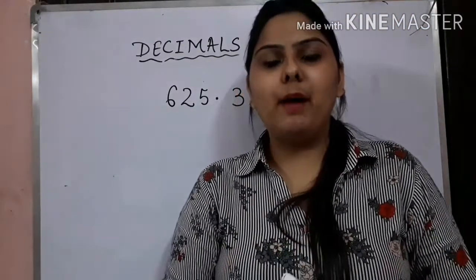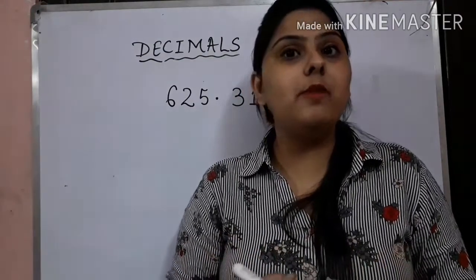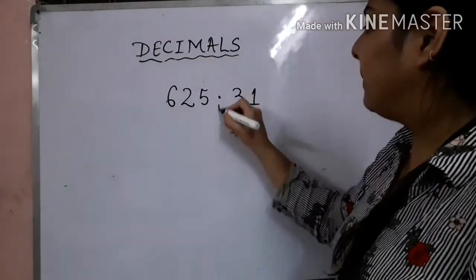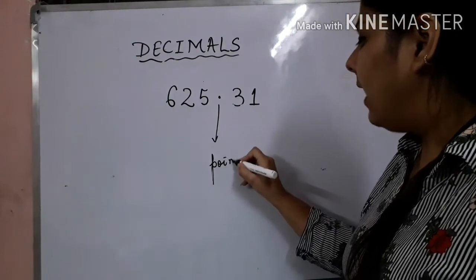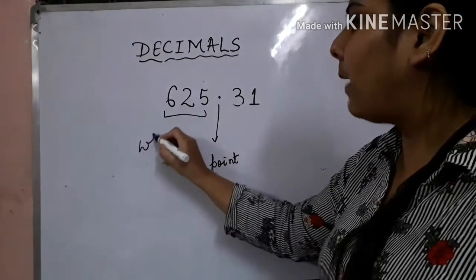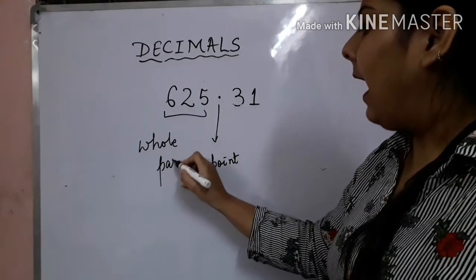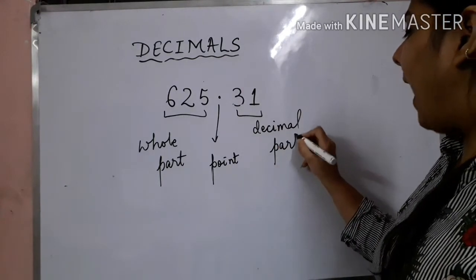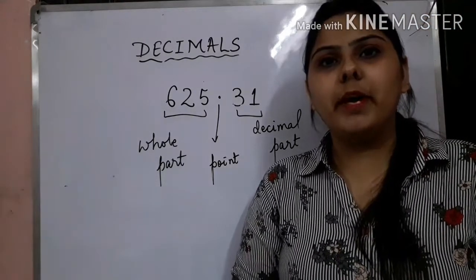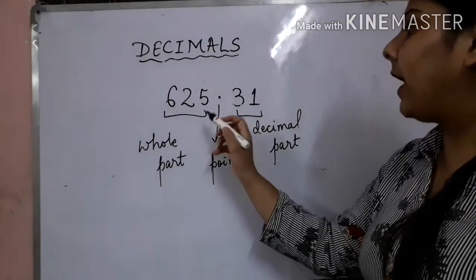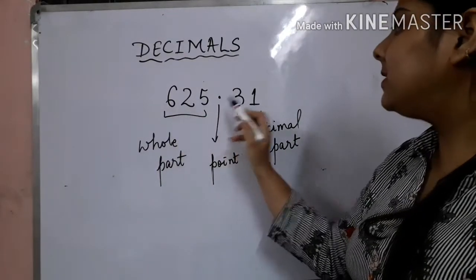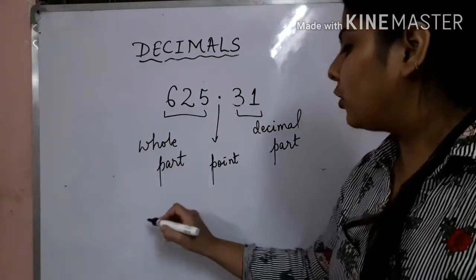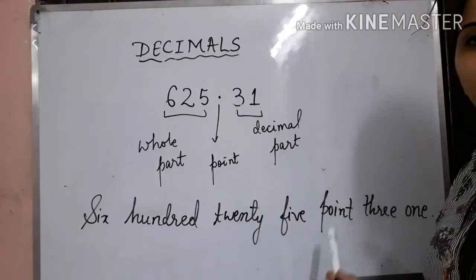Since we have done so many examples, you must have noticed that a decimal number consists of 3 parts: a decimal represented by a point or dot, the left side of the point is considered the whole part, and the right side of a decimal is considered to be the decimal part. So if you want to write the number name for the decimal number 625.31, you write it as 625 point 3, 1.